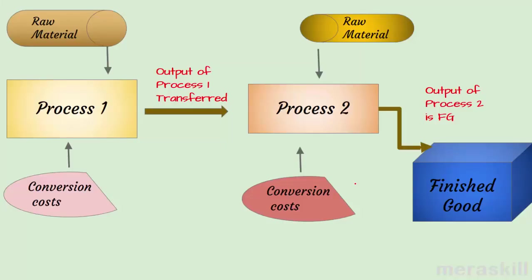Just to understand in pictorial form: raw material comes into a particular process — say we are making detergent. We get the raw material required, put it into the process, and we have conversion costs. What are conversion costs? The cost of converting raw material into finished product is called conversion cost. It does not include raw material cost; it includes labor, direct expenses, and manufacturing overheads. These together form the conversion cost.